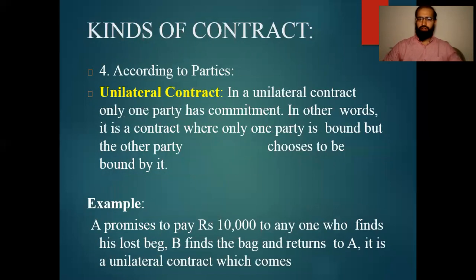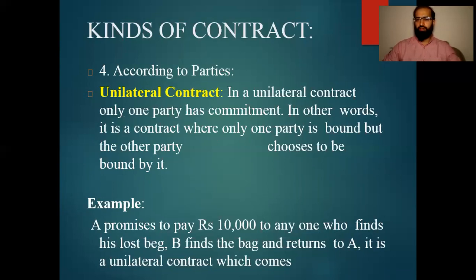Then, according to parties, we have the Unilateral Contract. Uni means single. In a unilateral contract, only one party has committed or fulfilled the promise. In other words, it is a contract where only one party is bound. For example, A promised to pay 10,000 to anyone who finds his lost bag. Mr. B found the bag and returned it to A. Mr. A is bound to give him 10,000. This is a unilateral contract.